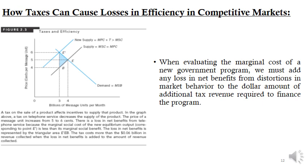The cost of the tax is not only the $0.06 billion per month paid by taxpayers. In addition, there is the loss in net benefits — called the excess burden of the tax — equal to the area E'EP from telephone services that results from the distortion in choices after the tax is imposed. When evaluating the marginal cost of a new government program, we must add any loss in net benefits from distortions in market behavior to the dollar amount of additional tax revenue required to finance the program.